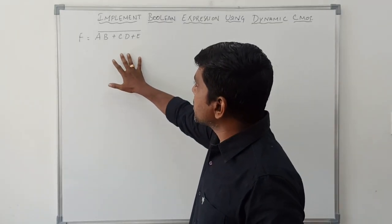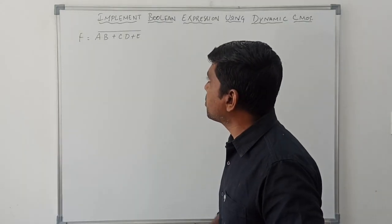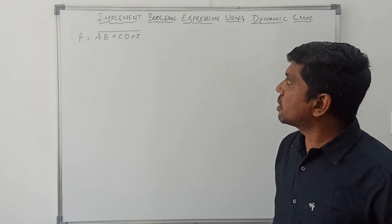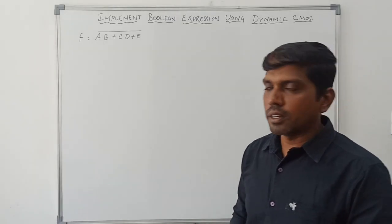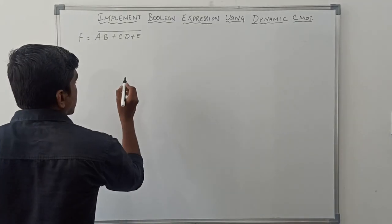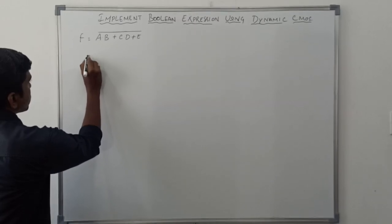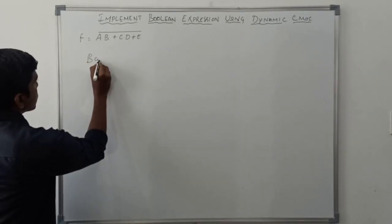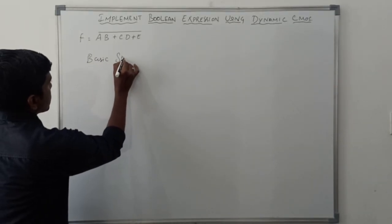The boolean expression is f equal to A dot B plus C dot D plus E, hold bar. So first I draw the basic structure of dynamic CMOS.